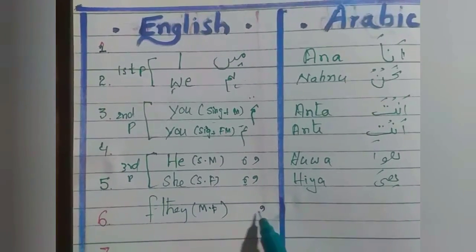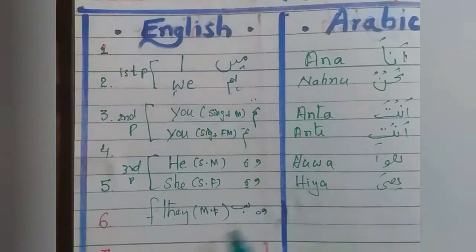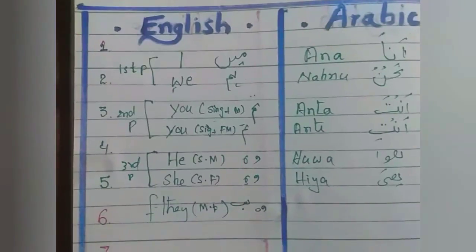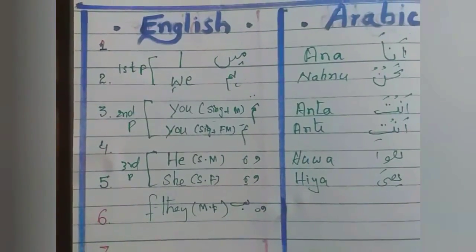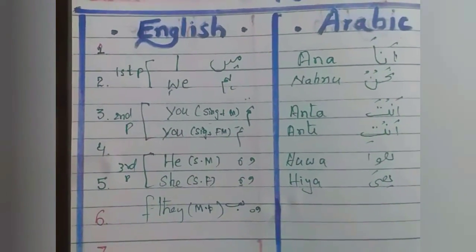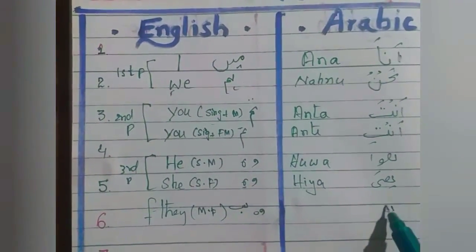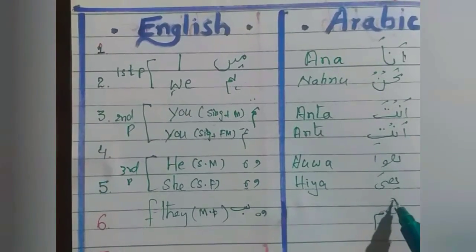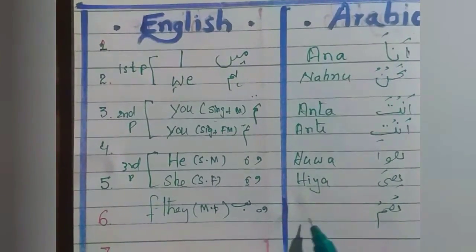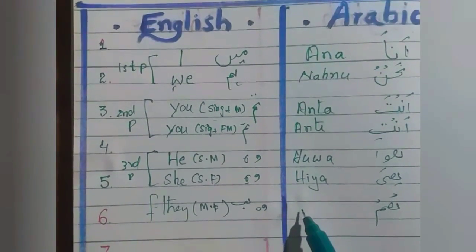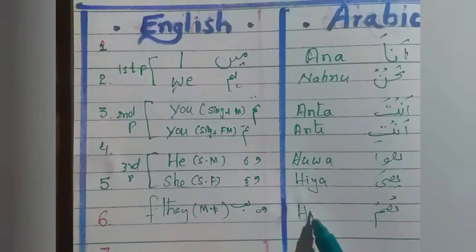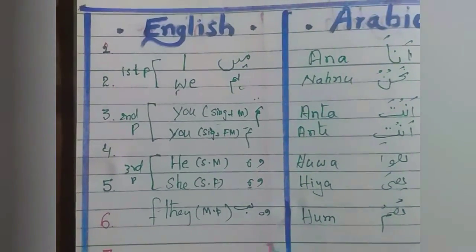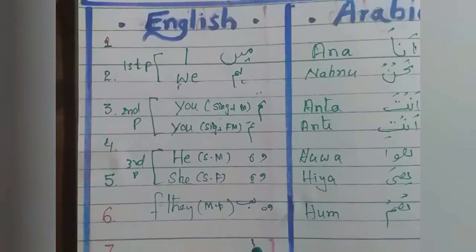In Urdu: 'wo sub', 'tamam'. We will use for both male and female. In Arabic it is 'hum' — they, they are, for all, sub ke liye.